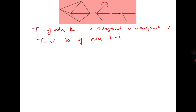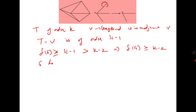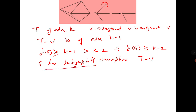T is a tree of order k, so it must have a leaf v, with u adjacent to v. Consider T−v, which has order k−1. Since δ(G) ≥ k−1 > k−2, by induction G contains a subgraph H isomorphic to T−v.